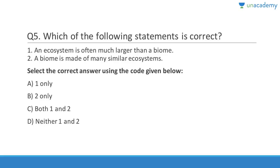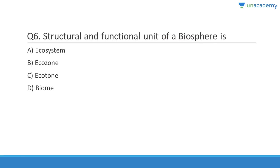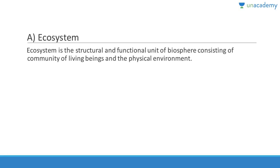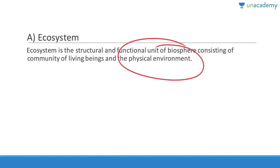Question 5: An ecosystem is often much larger than a biome — that is wrong; biome is much larger than ecosystem. The biome is made up of many similar ecosystems — that is correct. Answer is B, option 2 only. Question 6: The structural and functional unit of a biosphere is the ecosystem. The ecosystem is the structural and functional unit of biosphere, consisting of a community of living beings and the abiotic component, that is the physical environment.